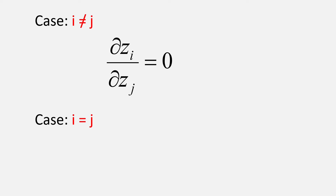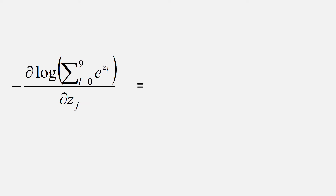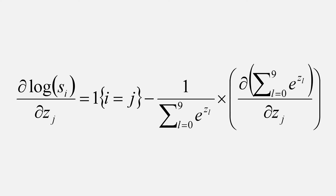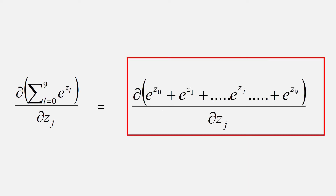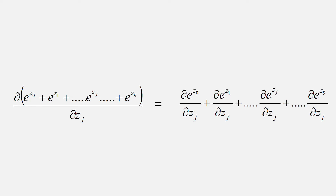And when i equals j, it equals 1. The second part can also be simplified. We take the derivative of the log and get this. So finally we have this expression. If we expand the summation, we get e to the power z_0 plus e to the power z_1 and in between e to the power z_j up to e to the power z_9. Then finding the derivative with respect to z_j, all terms except the partial derivative of e to the power z_j with respect to z_j will be 0, and that term equals e to the power z_j.